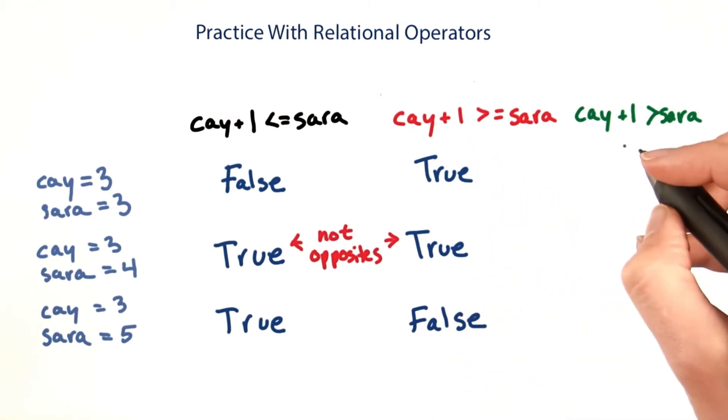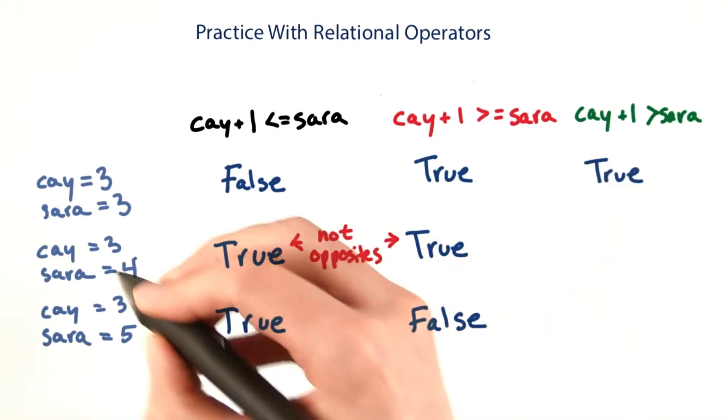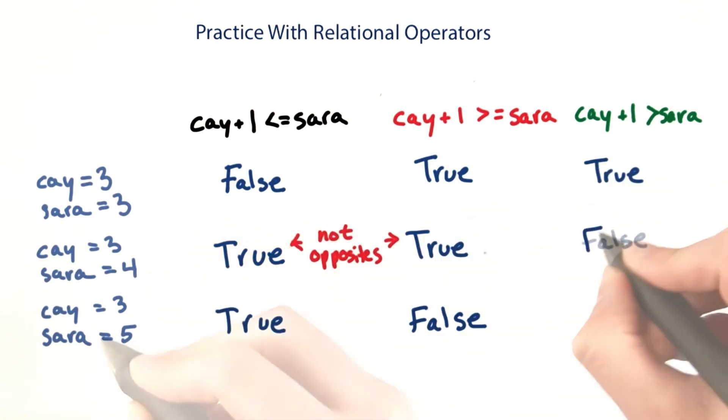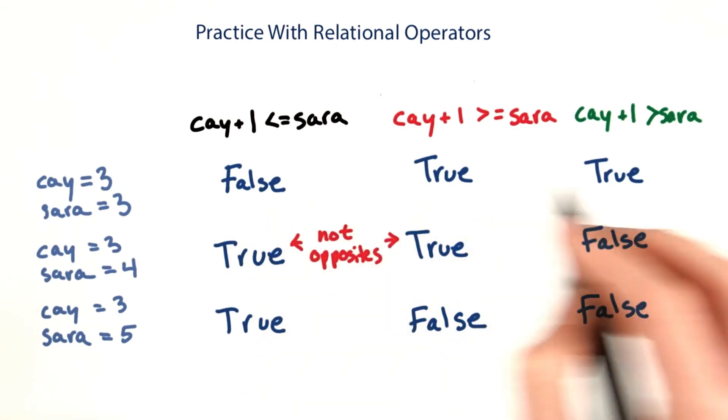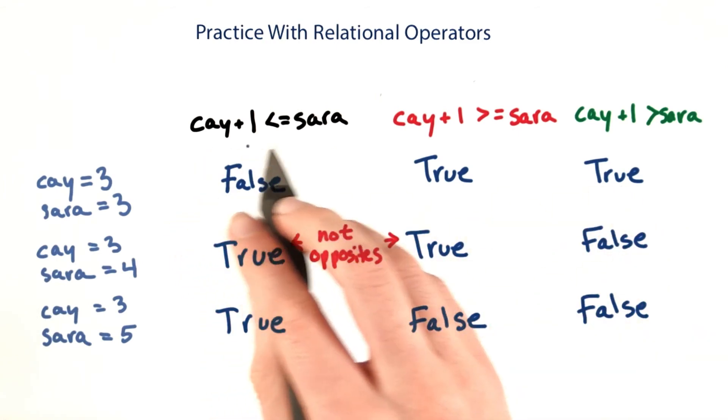But this last condition is true for the first case, false for the boundary case, and false for the last case. So it differs in every case from the original condition.